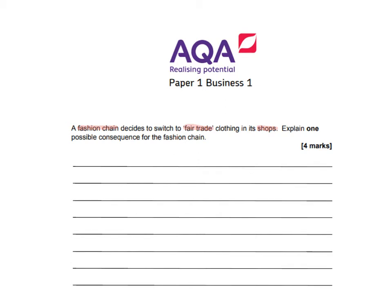When we look at this question — 'a fashion chain decides to switch to fair trade clothing in its shops, explain one possible consequence for the fashion chain' — I've highlighted in red what could be considered context. What you may get is students just concentrating on the fair trade or ethical aspect and forgetting that it's actually about a fashion chain and a clothing shop. The technical elements and theory may be there, but the context is missing.